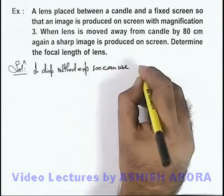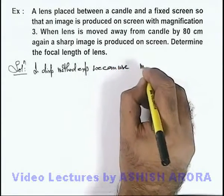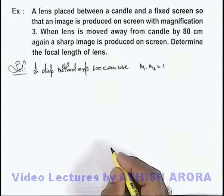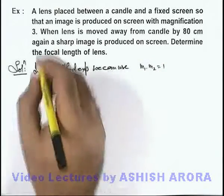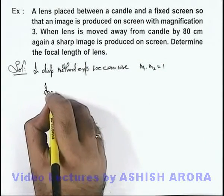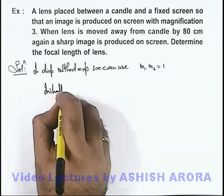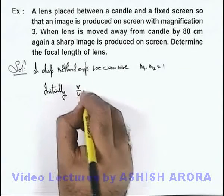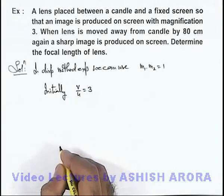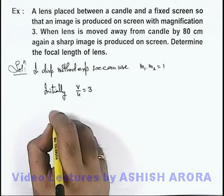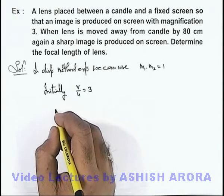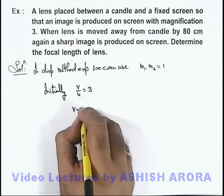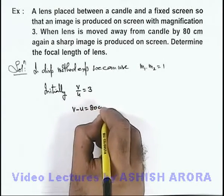In the displacement method, we can use the product of the two magnifications: m1 multiplied by m2 equals 1. We are given that the initial magnification is 3, so v by u must equal 3. We are also given that the lens displacement is 80 centimeters, meaning v minus u equals 80 centimeters.